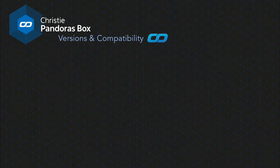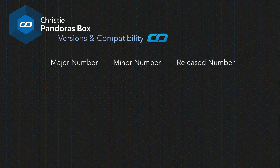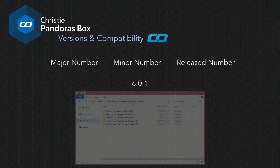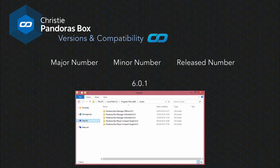We are continually improving our software by adding new features or correcting issues. Every few months we release a new Pandora's Box installer with a major version, a minor version, and a release number — for example, 6.0.1. When installing a new version, note that the old version will not automatically be removed, so you can go back to older versions at any time. Please note that all devices must run exactly the same version — it is not possible to mix versions in a setup.